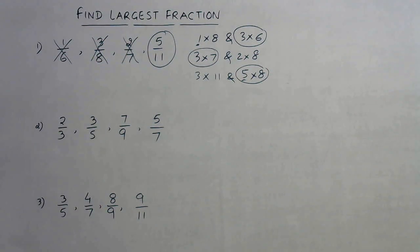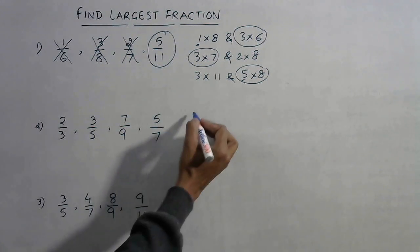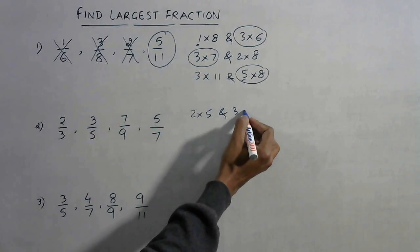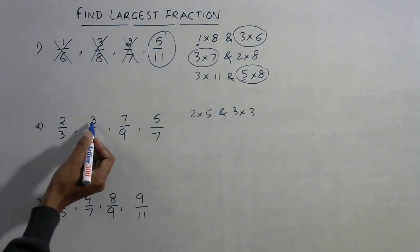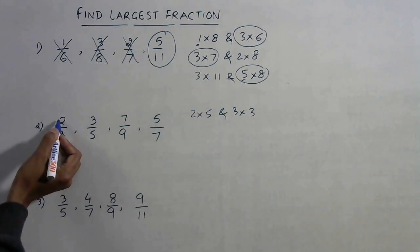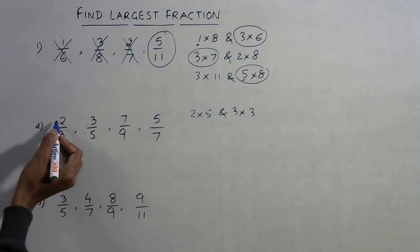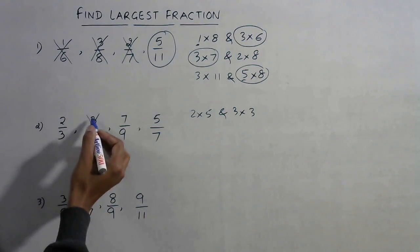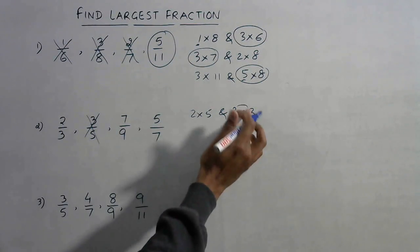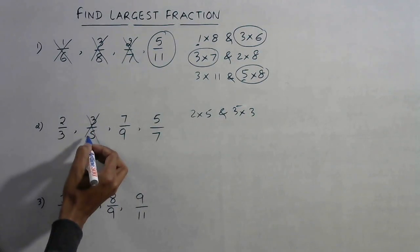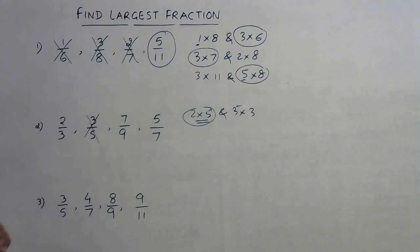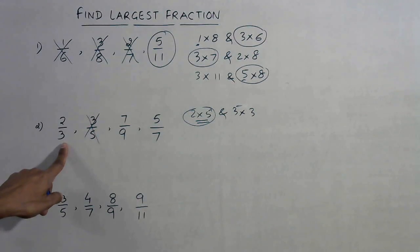If it is not clear, let's take one more question. See, two into five is 10 and three into three is 9. This numerator is giving a smaller product and this numerator is giving a larger product, so this is greater and this is smaller. We discard 3/5 and retain 2/3.